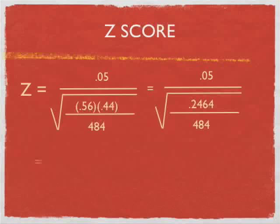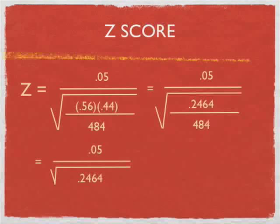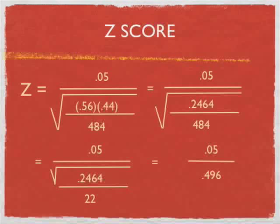That equals 0.05 divided by the square root of 0.2464 divided by 484, which is really just the square root of 484, which equals 0.05 divided by 0.0496.